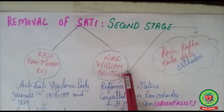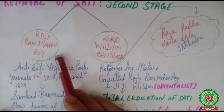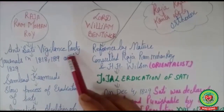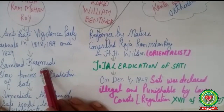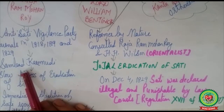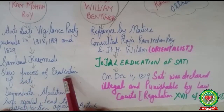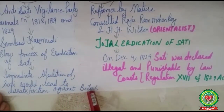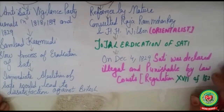In the second stage, Raja Ram Mohan Roy and Lord William Bentinck came forward to end the sati system. Raja Ram Mohan Roy, often called the father of the Indian Renaissance, started an anti-sati vigilance party to track how many women were dying because of sati. He published journals in 1818, 1819, and 1829 directed at ending sati in India, his most popular journal being Sambad Kaumudi. He believed that ending sati should be a slow process, as immediate abolition would lead to dissatisfaction against the British.